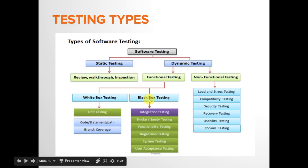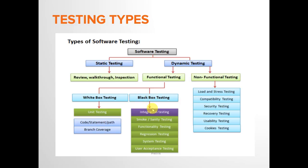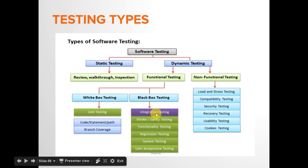In black box testing, the first type is integration testing, where once two or more units developed by developers are merged together, testing ensures how they perform together. Integration testing may come under black box or white box testing depending on your stakeholder, client, or the model you're following.